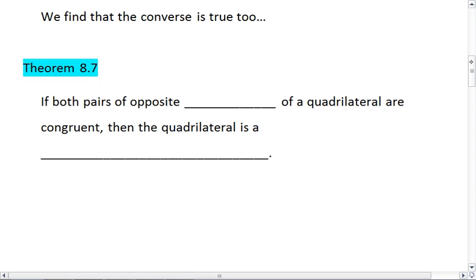We find then that the converse is true as well. Meaning, if both pairs of opposite sides of a quadrilateral are congruent, then the quadrilateral must be a parallelogram.